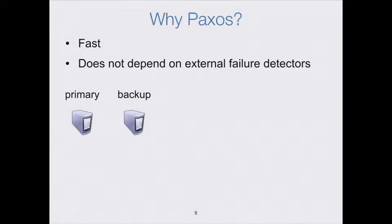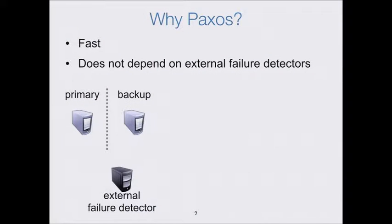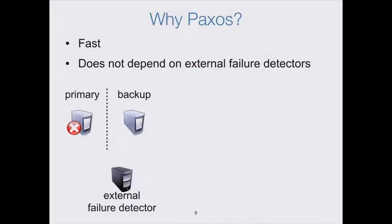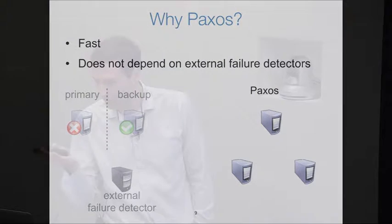In a primary backup setup, if there's a network partition and clients talk to both the primary and the backup, their states will diverge. So we have an external failure detector that decides which of the two copies has officially failed and chooses the other as the official authority copy. But there will be a time between the partition occurring and the external failure detector choosing a new copy during which the system is unavailable for new commands.